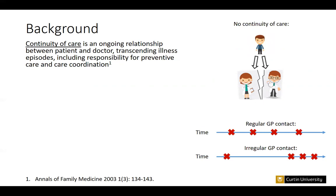Our research group has additionally measured the regularity of GP contacts. A patient can see the GP on a regular basis, which probably reflects planned proactive care, or they might have irregular contacts — extended periods without seeing the GP, followed by a flurry of activity in response to some problem.